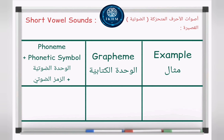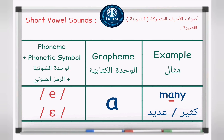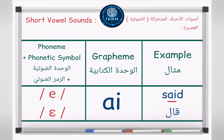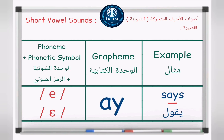Phoneme plus phonetic symbol: /ɛ/. Grapheme: letter A. Example — many, /ɛ/, many. Grapheme: letters A-E. Example — aesthetic, /ɛ/, aesthetic. Grapheme: letters A-I. Example — sad. Grapheme: letters A-Y. Example — says, /ɛ/, says.